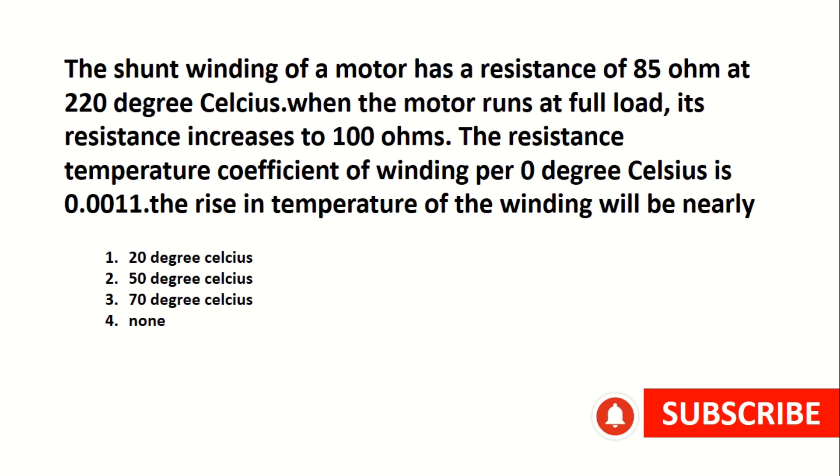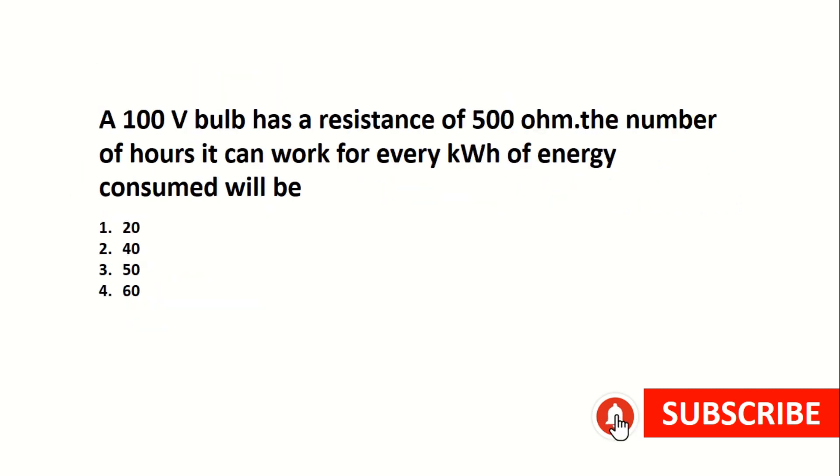The resistance temperature coefficient of winding per 0 degree Celsius is 0.0011. The rise in temperature of the winding will be nearly 70 degree Celsius. A 100 volt bulb has a resistance of 500 ohm.